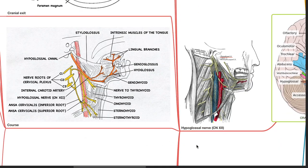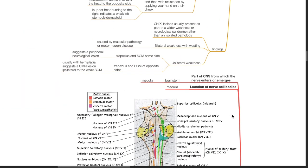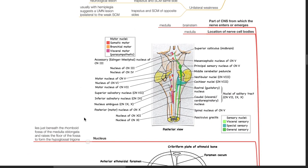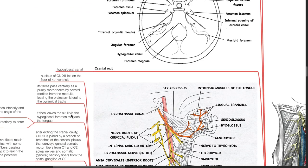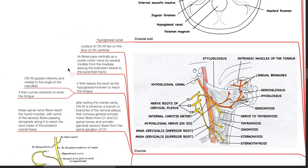The hypoglossal nerve, cranial nerve 12, arises from the medulla. Its nucleus lies just beneath the rhomboid fossa of the medulla oblongata and raises the floor of the fossa to form the hypoglossal trigone. It exits the cranium via the hypoglossal canal. Its nucleus lies on the floor of the fourth ventricle, and its fibers pass ventrally as a purely motor nerve by several rootlets from the medulla, leaving the brain stem lateral to the pyramidal tracts, then leaving the skull via the hypoglossal foramen to reach the tongue.